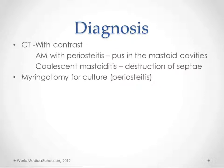When you suspect mastoiditis, you get a CT. It can be done without contrast, but if you are suspecting some kind of spread, then you do it with contrast to help see where the spread might be going. This also helps determine whether this is acute mastoiditis with periostitis — meaning pus in the mastoid cavities — or coalescent mastoiditis, where those bony septae have been destroyed, leaving one big pool of pus in the mastoid area.